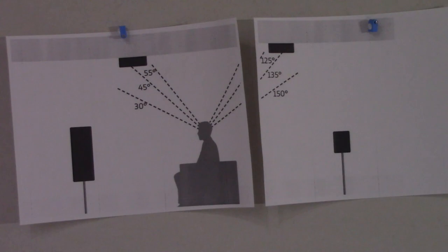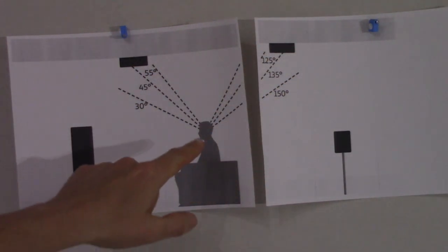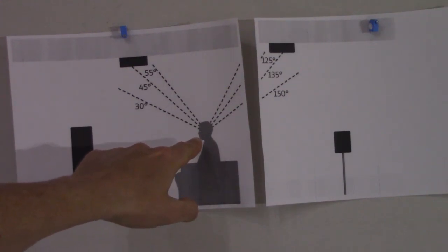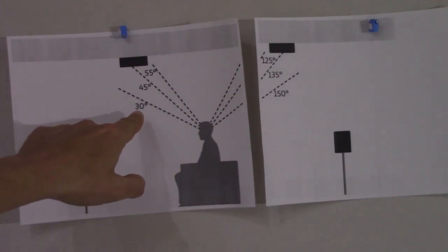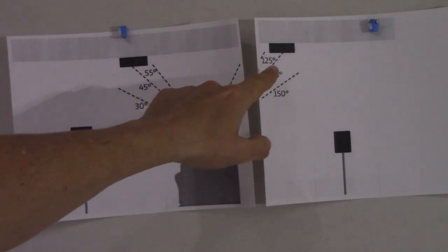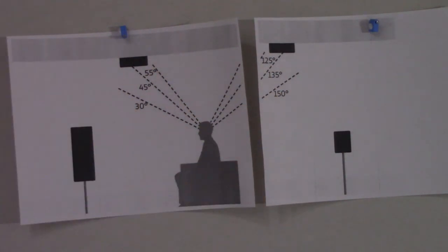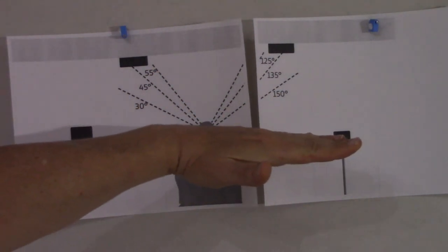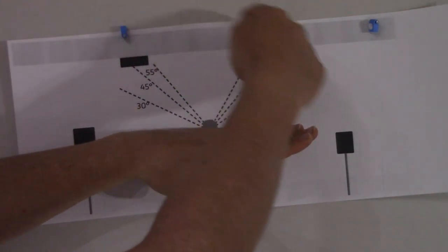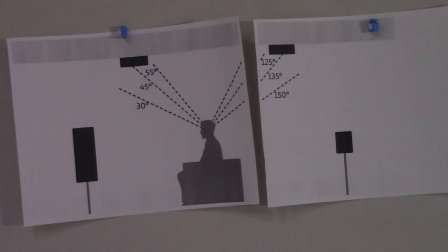Now here's Dolby Atmos ceiling speakers. What you want to do to install them is install them at a 30 to 55 degree angle or 125 and 150 coming from the rear. Think of this as a giant protractor and you want to achieve the correct angle, especially since I'm doing a four speaker setup. I'm not a professional, I'm just learning from other YouTube videos.